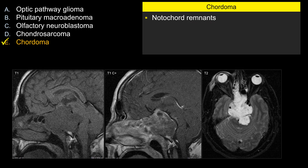Chordoma is a notochordal remnant — it originates from the notochordal remnants. Therefore, they tend to cluster right in the central location — not always, but typically. And chordoma can occur anywhere along the axial skeleton, so anywhere along the spine.